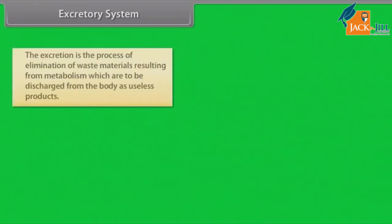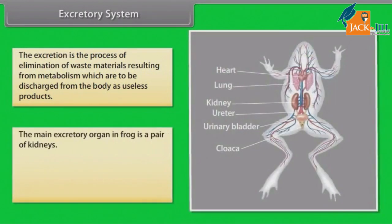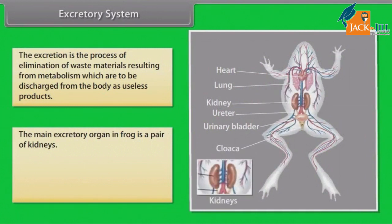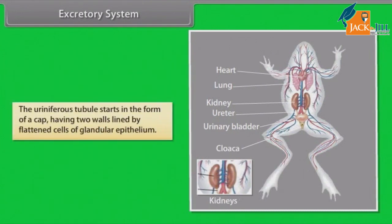Excretory System: Excretion is the process of elimination of waste materials resulting from metabolism, which are discharged from the body as useless products. The main excretory organ in frog is a pair of kidneys. The microscopic structure of the kidney reveals the presence of numerous coiled tubes known as uriniferous tubules. The uriniferous tubules start in the form of a cap having two walls lined by flattened cells of glandular epithelium.